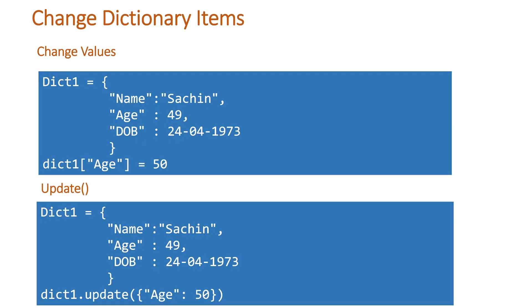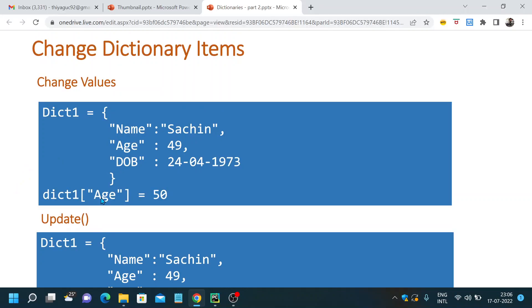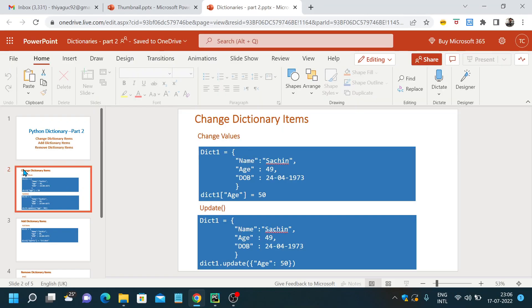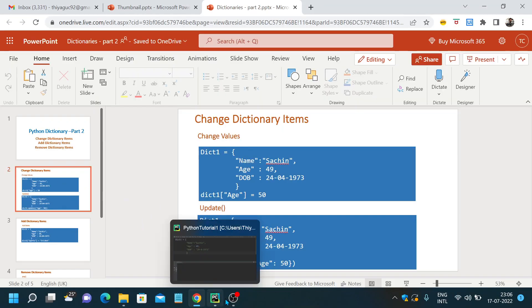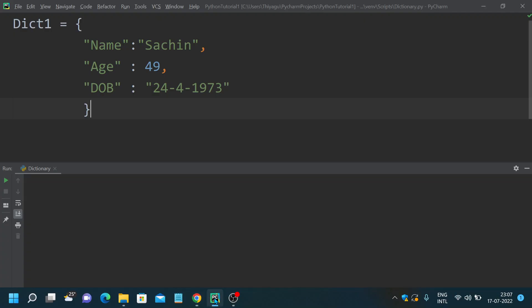First we will look at how to change dictionary items. There are two ways in which you can change dictionary items: one is by changing the values directly, and another one is using the update method. Let's look at an example.